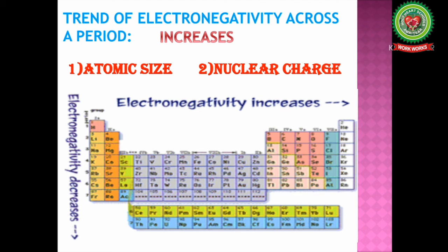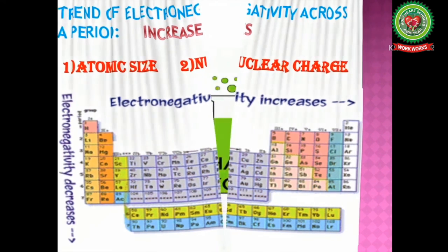Moreover, the size of the atom becomes smaller as we move from left to right. Hence there would be more nuclear pull, meaning more electrons will be attracted to the nucleus. That is why electronegativity while moving across a period increases.